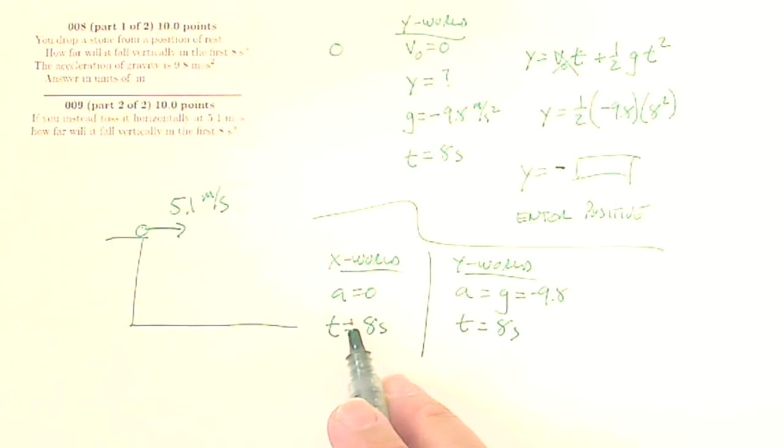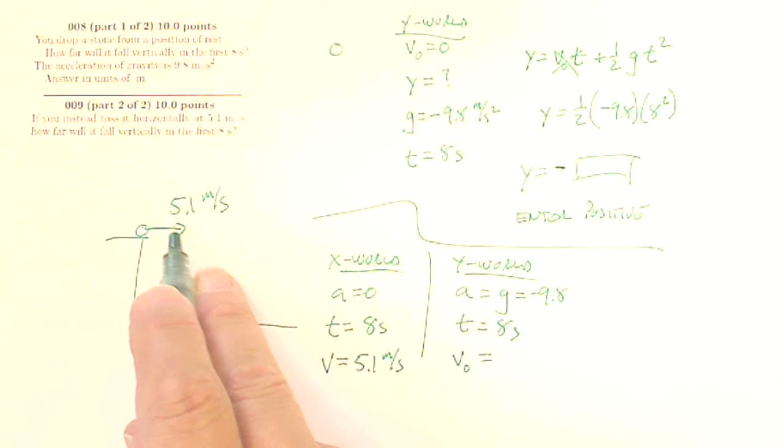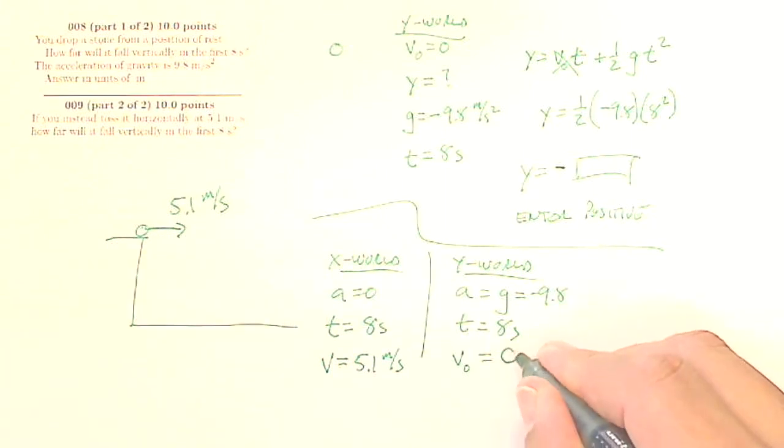What else do I know in the x world? I don't know the distance. I do know, where's this 5.1 meters per second? If this is horizontally, then this velocity is all x velocity. So my velocity is going to be 5.1 meters per second. What's my y world velocity going to be? Well, if this is horizontally thrown, then that 5.1 meters per second is all horizontal. So my initial velocity in the y world is 0 meters per second.